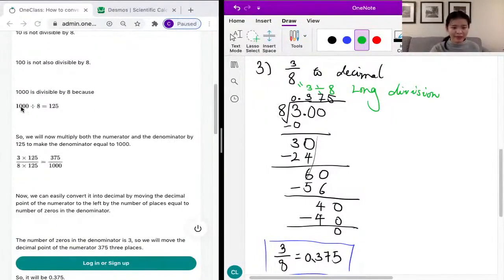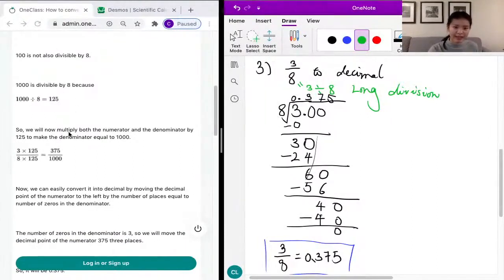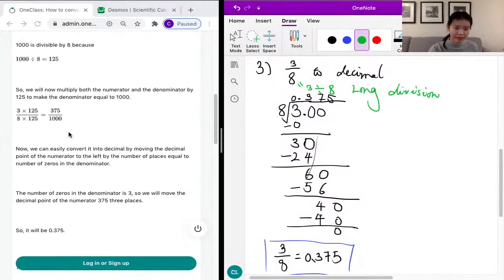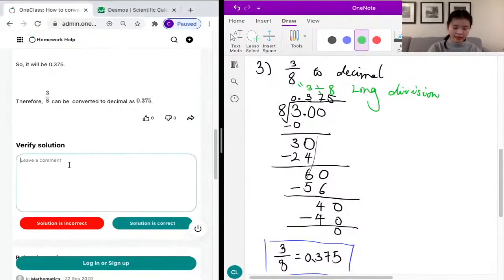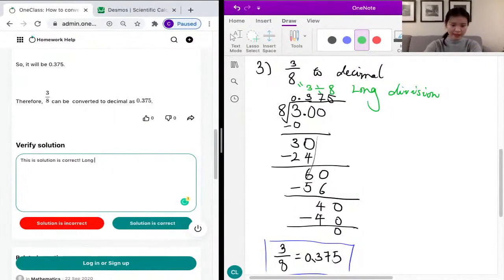To see that 1000 divided by 8 is 125, if you don't have this memorized, it's less easy to see. We have the same answer and the solution is correct. I'll just say something like long division might be easier, but that's also just a personal preference.